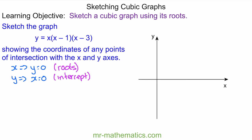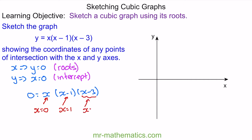We'll begin by finding our roots. We set y equal to zero, so we have zero equals x multiplied by x minus one multiplied by x minus three. Because we're multiplying each polynomial, anything times zero is zero. So our solutions are x equals zero, or x minus one equals zero giving x equals one, or x minus three equals zero giving x equals three.